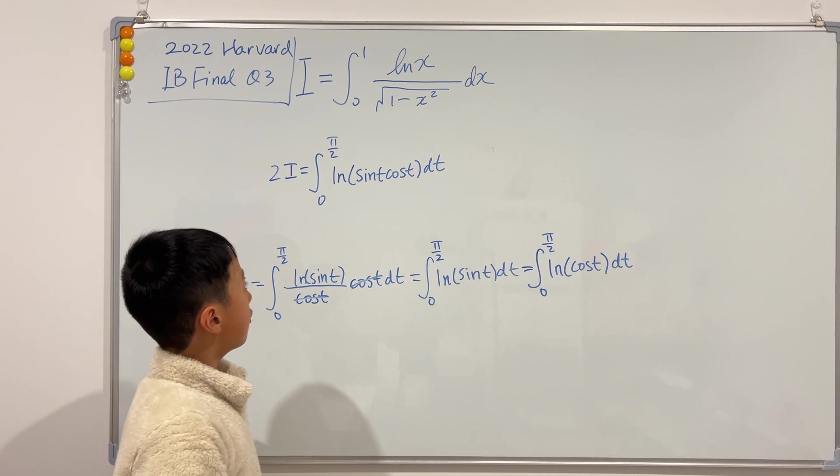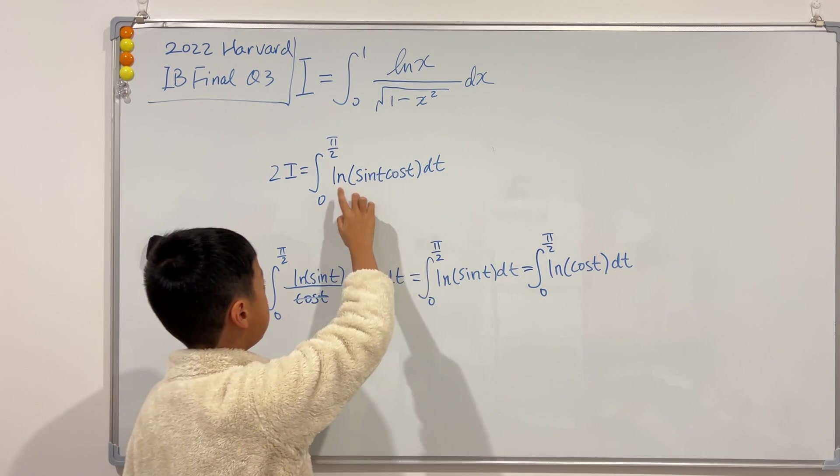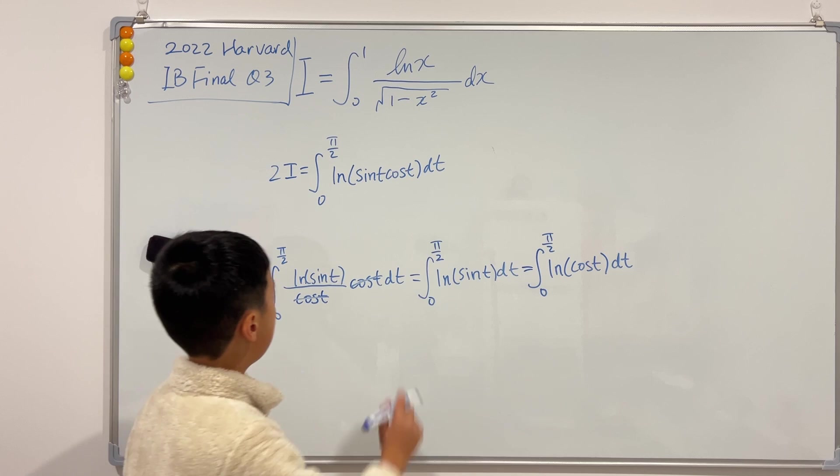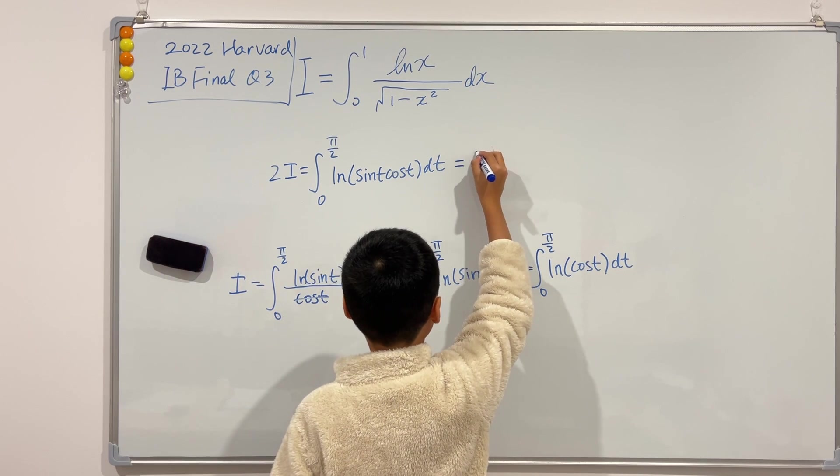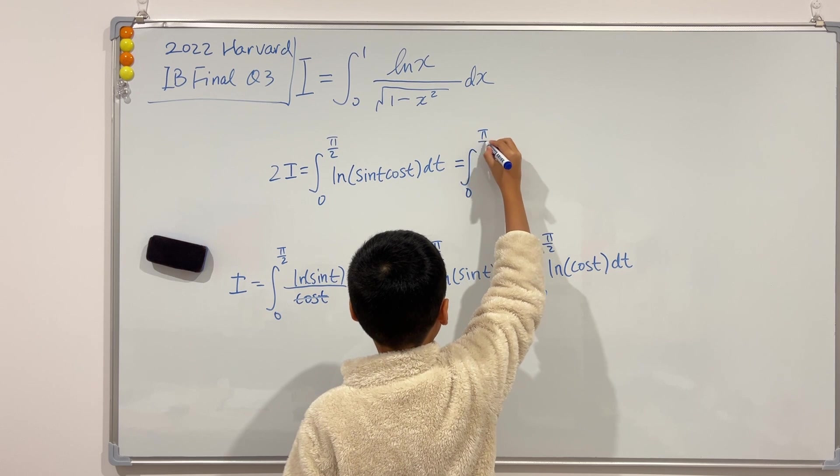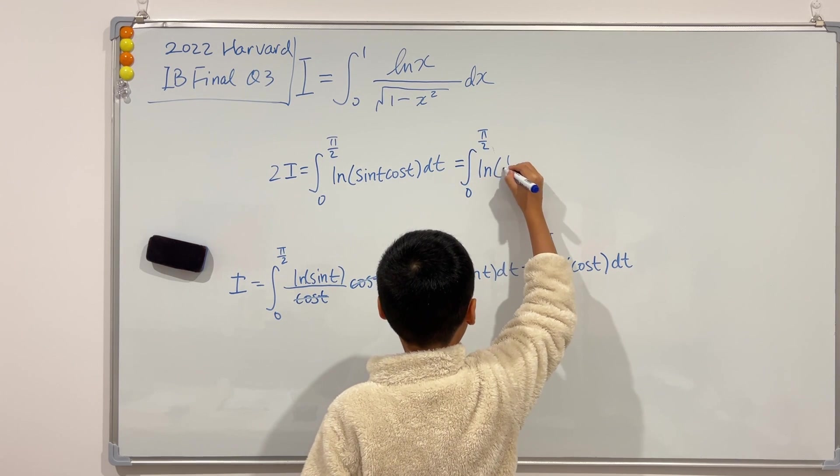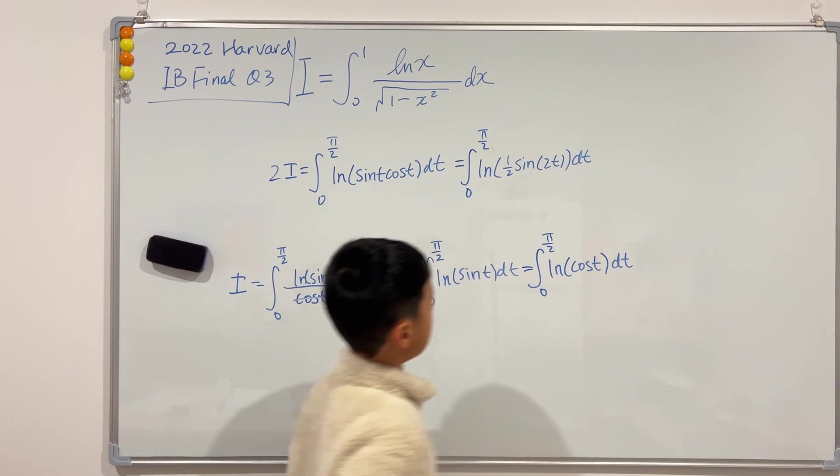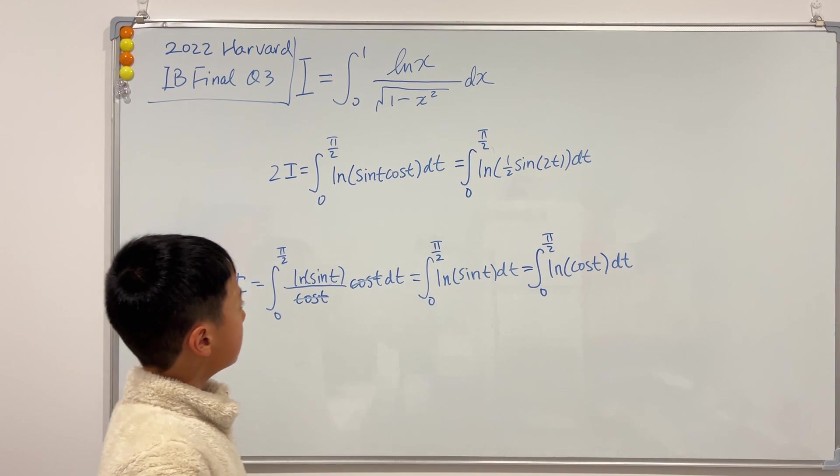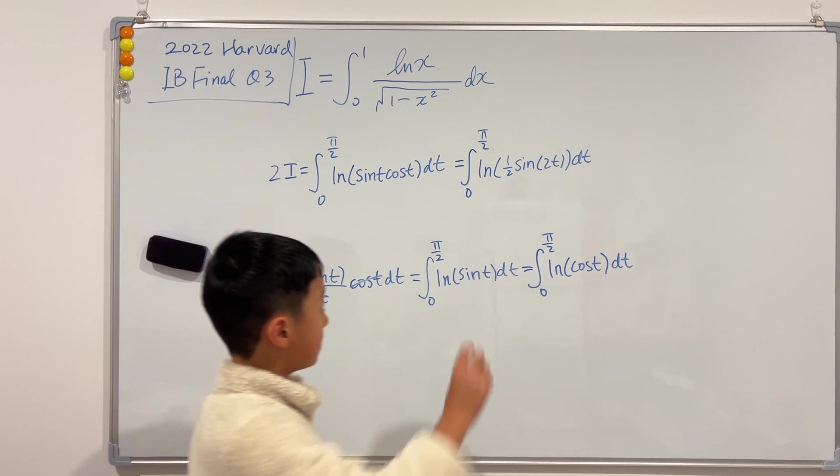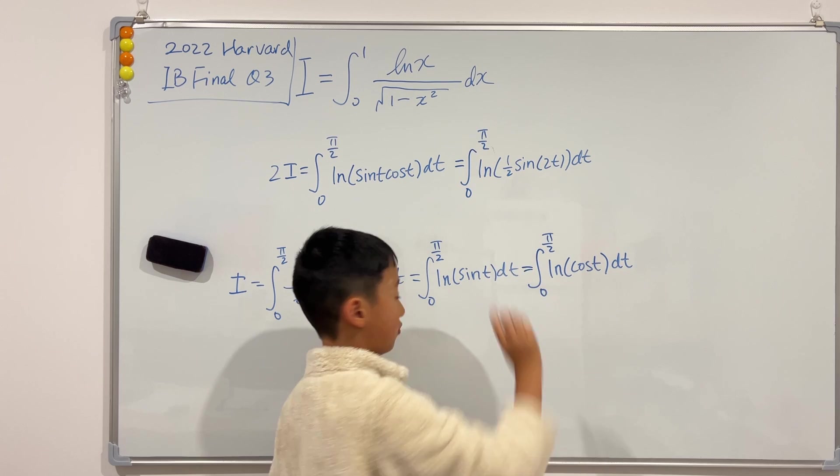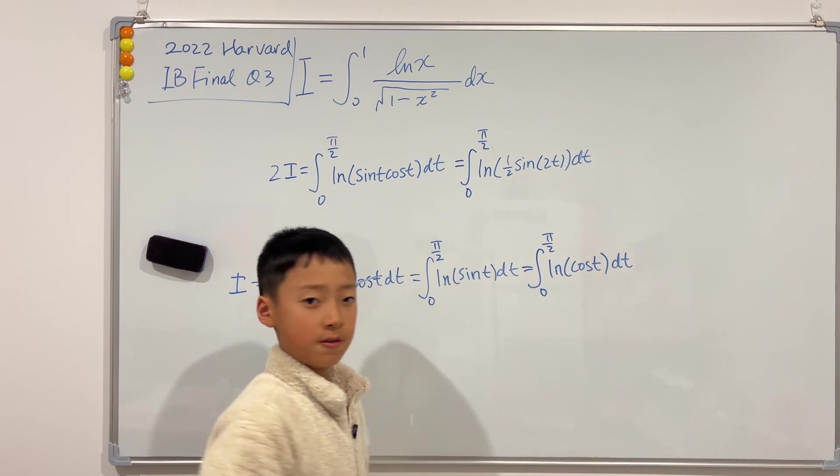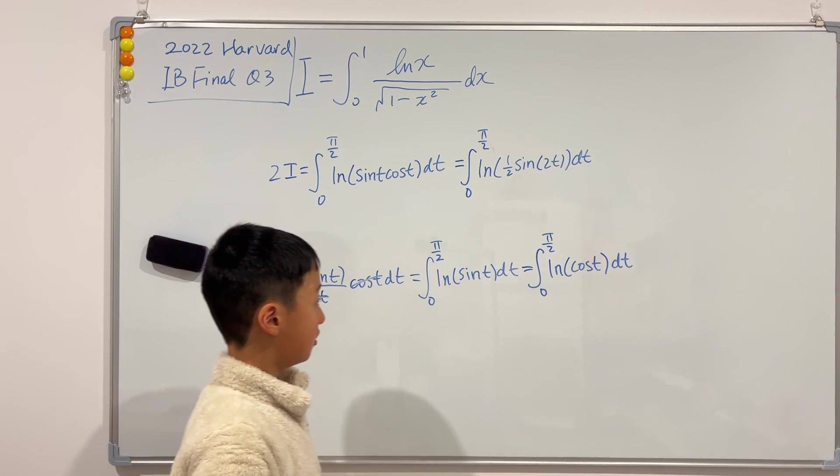Now what do we do? Well, we can see that the integrand or the thing inside of the ln is just one half of sine of 2t, right? So we can just change it to that. So this is still equal to the integral from 0 to π over 2 of ln of one half sine of 2t. Look, we can actually separate this ln, which is a product of one half and sine of 2t, into the sum of two integrals. The first one is just ln of one half. The second one is ln of sine of 2t.